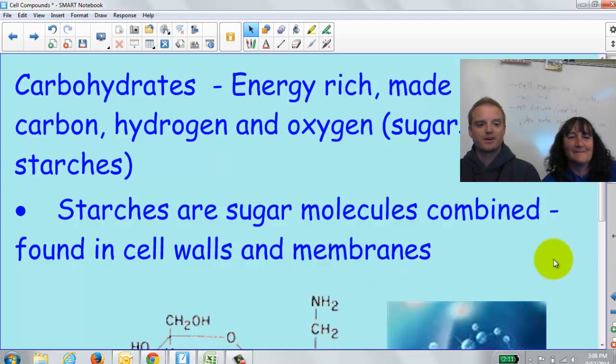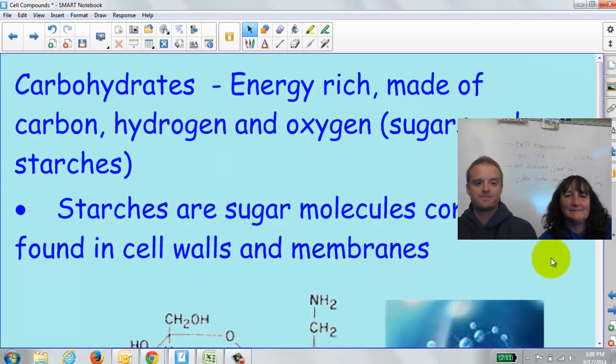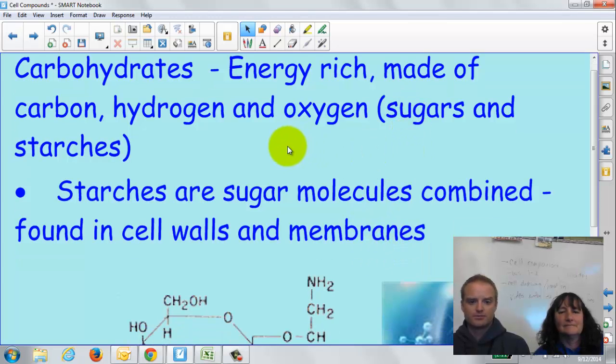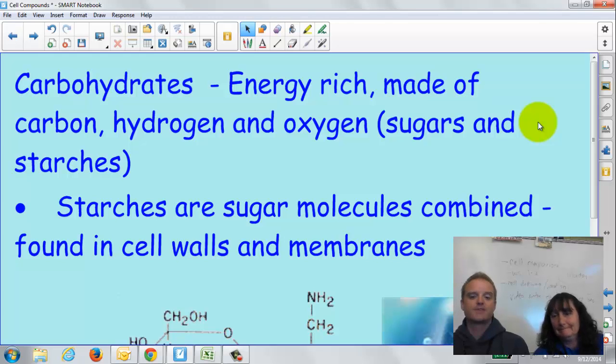So next up, guys, are carbohydrates. Carbohydrates are, you know, carbs are the enemy. Not necessarily. But these are energy-rich molecules made of carbon, hydrogen, and oxygen. So there's that C for carbon. And they make up sugars and starches. And these molecules, you need them. What are they found in, Mrs. Froman? In your cell walls and your cell membranes. So I need them. I can't survive without them? Yeah, you gotta have them. Gotta have them.